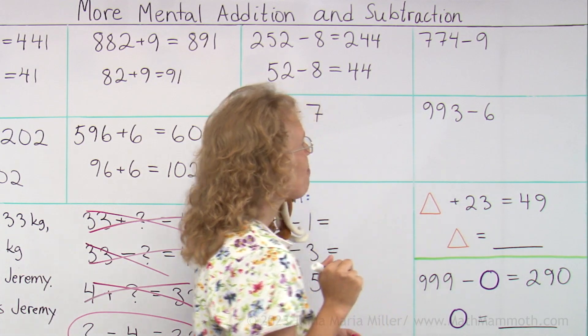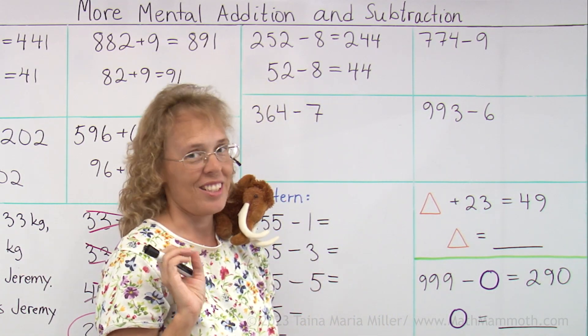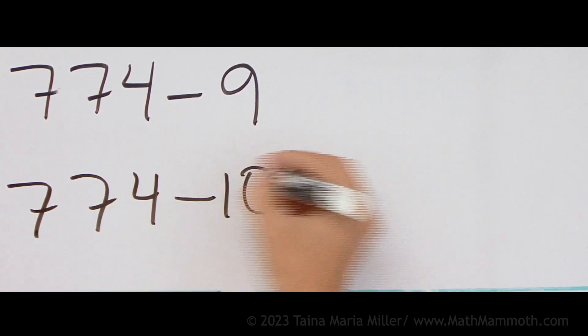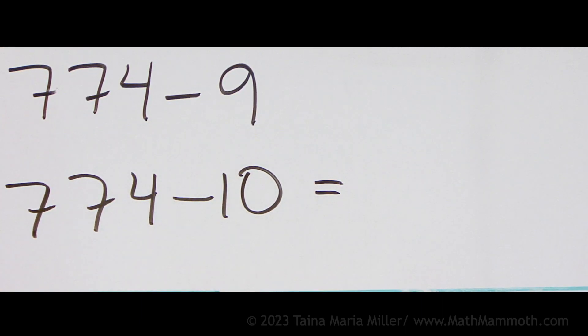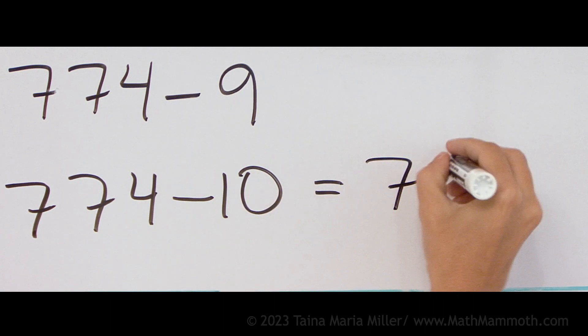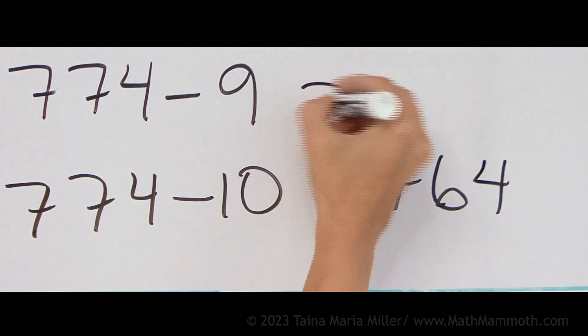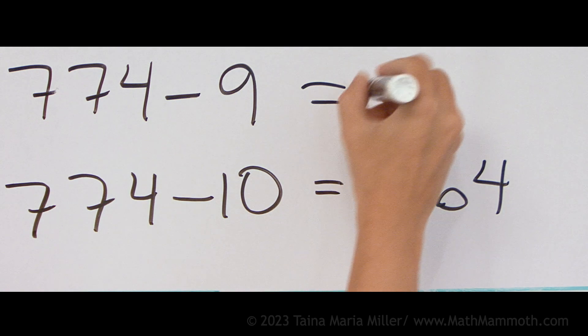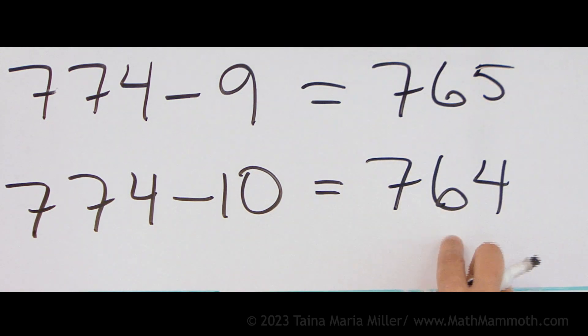774 minus 9. Over here let's use a different kind of helping problem. Since 9 is so close to 10, then I like to do it this way. 774 minus 10, that's take away 10, 764. And now I subtracted 10, so I subtracted 1 too much. So the answer to this one is 1 more than this answer.